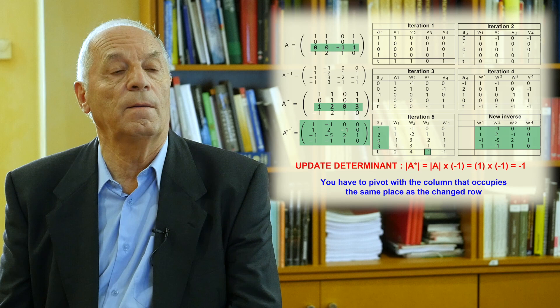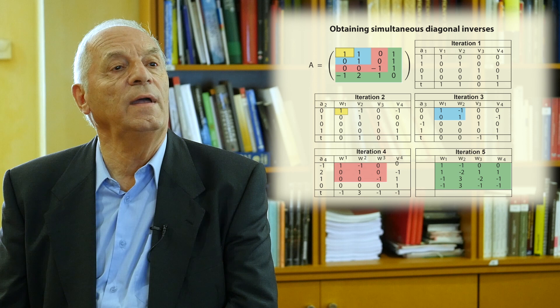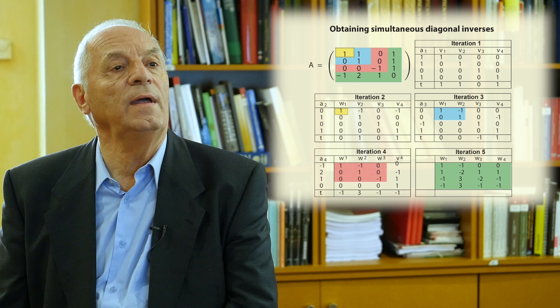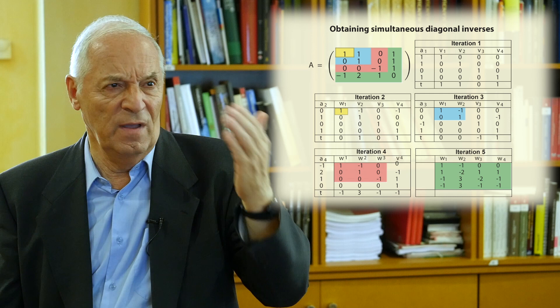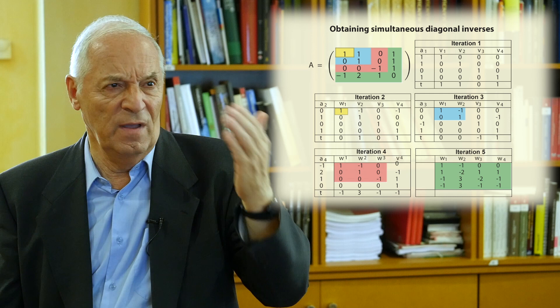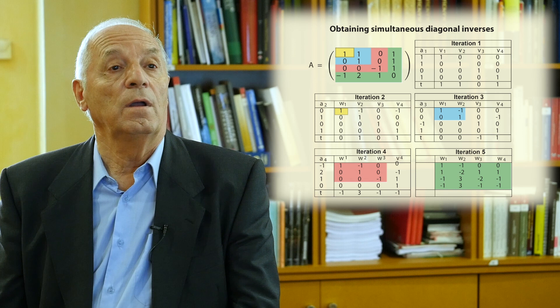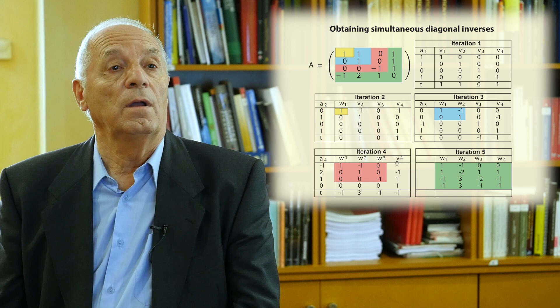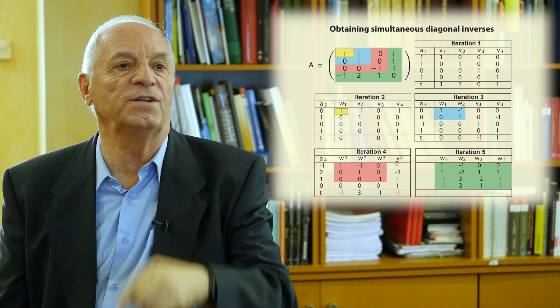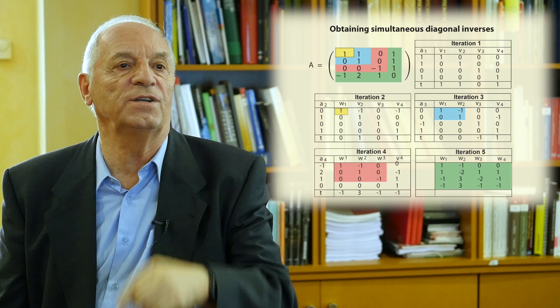Another interesting property of this algorithm is that we can obtain the inverses of the matrices associated to the main diagonal of dimension 1, 2, 3, and 4. You have one matrix in yellow (1 by 1), one in blue (2 by 2), one in fuchsia (3 by 3), and finally the whole matrix in green. The inverses of those matrices are all contained in these tables: the yellow one is in iteration 2, the 2 by 2 in blue is in iteration 3, the 3 by 3 in fuchsia is there, and finally the green one. So this is an extra bonus you get when you pivot in order.